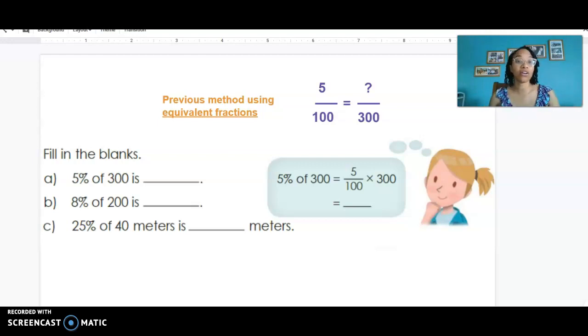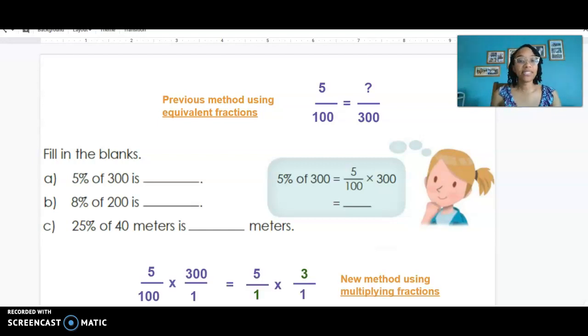So we also need to look at another way using multiplication. As you can see on the bottom and in our thought bubble, 5% of 300 is the same as 5 hundredths because we know percent means out of 100. That 'of' translates to a multiplication sign and then we have our 300.